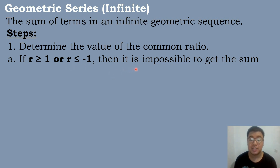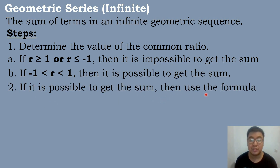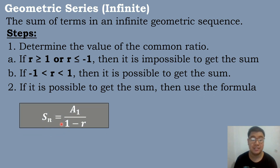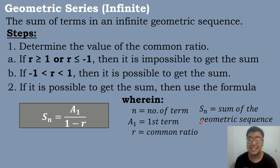Then it is impossible to get the sum. The second condition: if negative 1 is less than the common ratio less than 1, then it is possible to get the sum. So if the value of the common ratio lies in condition number 2, we will use the formula S sub N equals A sub 1 over 1 minus R, wherein A sub 1 is the first term, R is the common ratio, and S sub N is the sum of the geometric sequence.